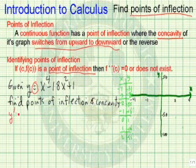So if we take the first derivative, we get 4x cubed minus 36x.